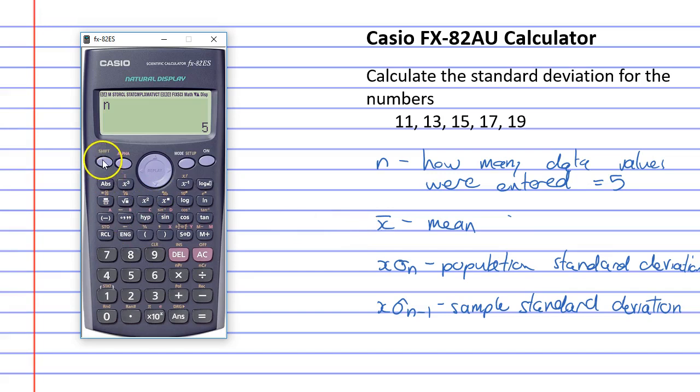Next, we want x bar. So, shift 1, 5. x bar is number 2. Equals. And we've got 15.